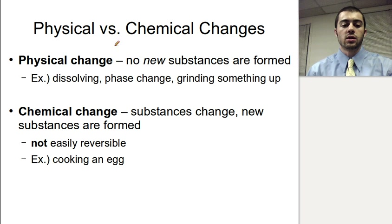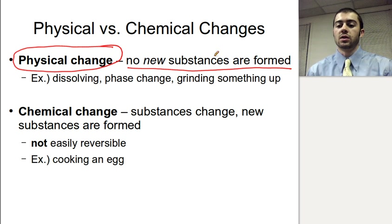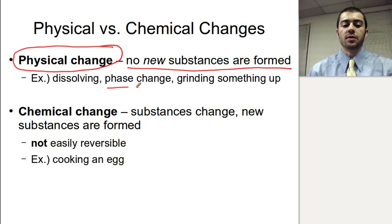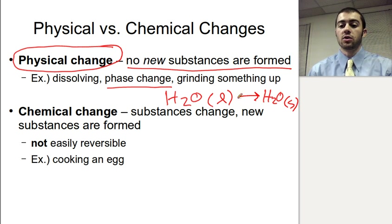Starting with physical and chemical changes, the key is knowing the difference between them. With a physical change, no new substances are formed. We're taking the same substance and maybe changing how it looks or its shape, but we're not forming any new substances — it's still the same stuff. An example of this would be a phase change. If we take water and freeze it, all we're doing is going from water in the liquid phase to water in the solid phase. We haven't changed the formula; it's still just water. It looks different and it's in a different phase, but the substance has not changed. So if there's no change in the substances, that means it's a physical change.